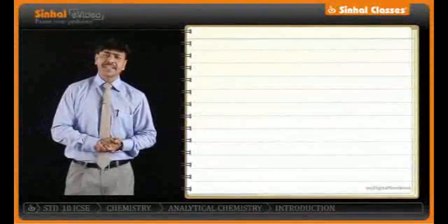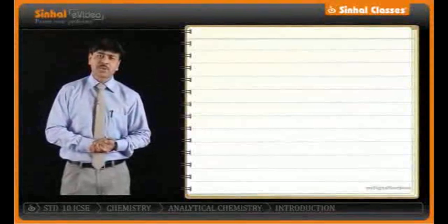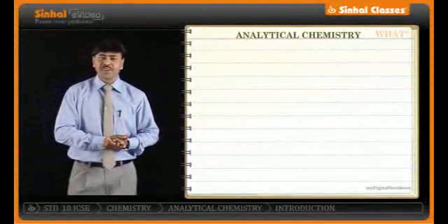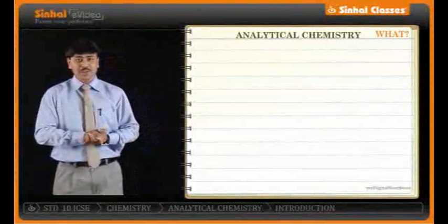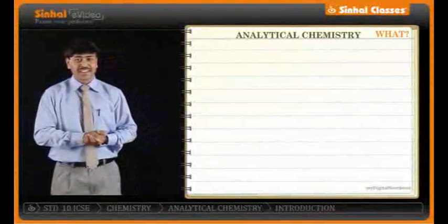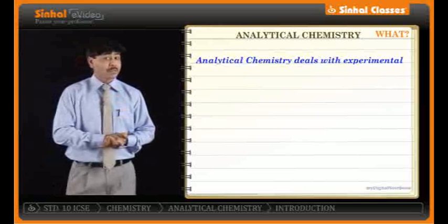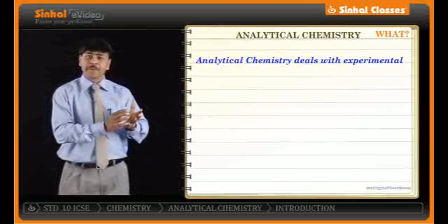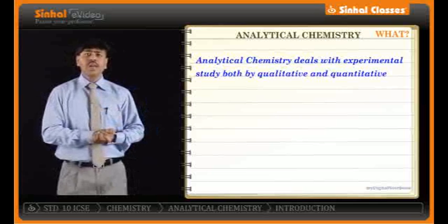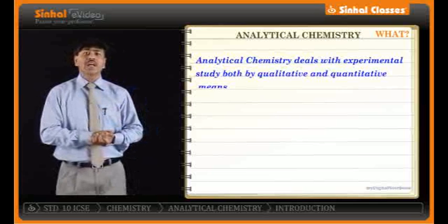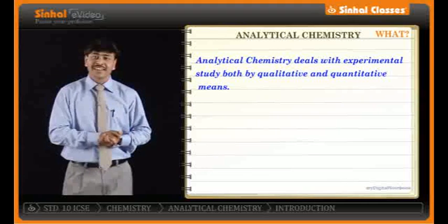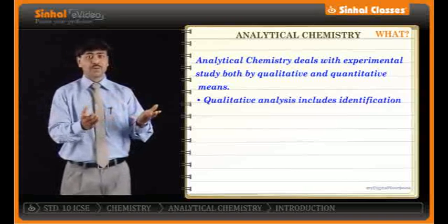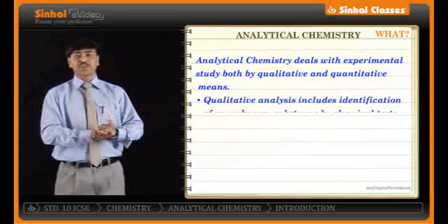Let us start with a very interesting topic: analytical chemistry. What do you mean by analytical chemistry? It's a branch of chemistry which deals with the experimental study, both qualitative and quantitative means — that is, to go into the lab, perform the experiment, and observe the results.